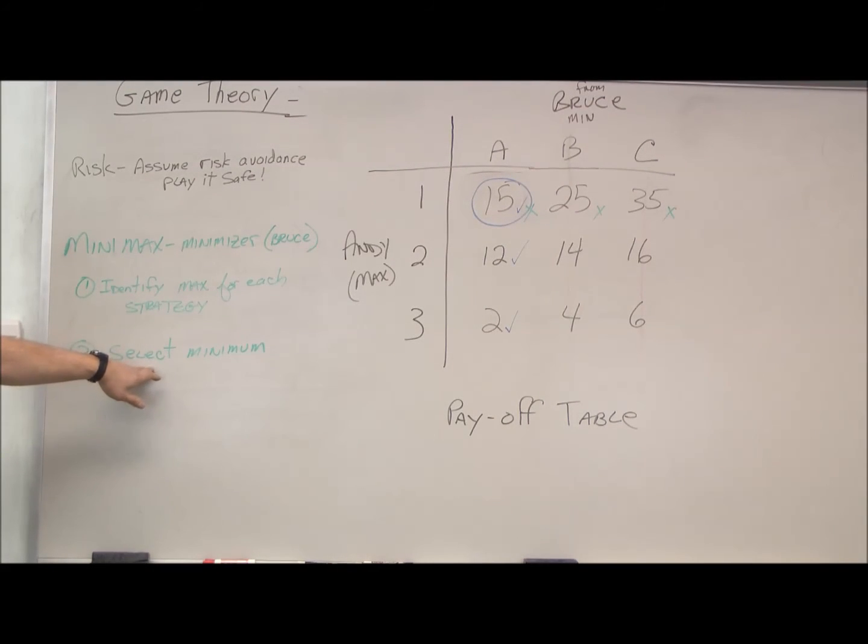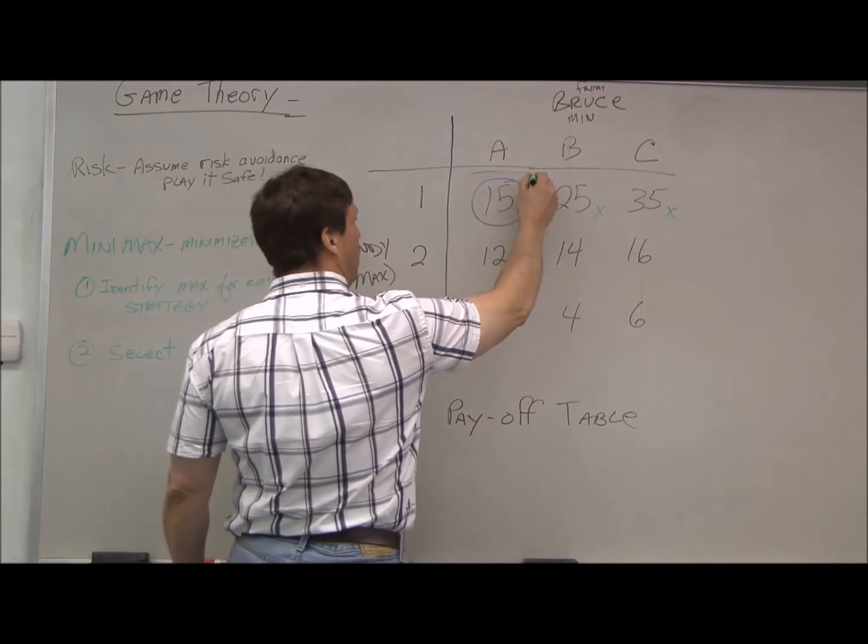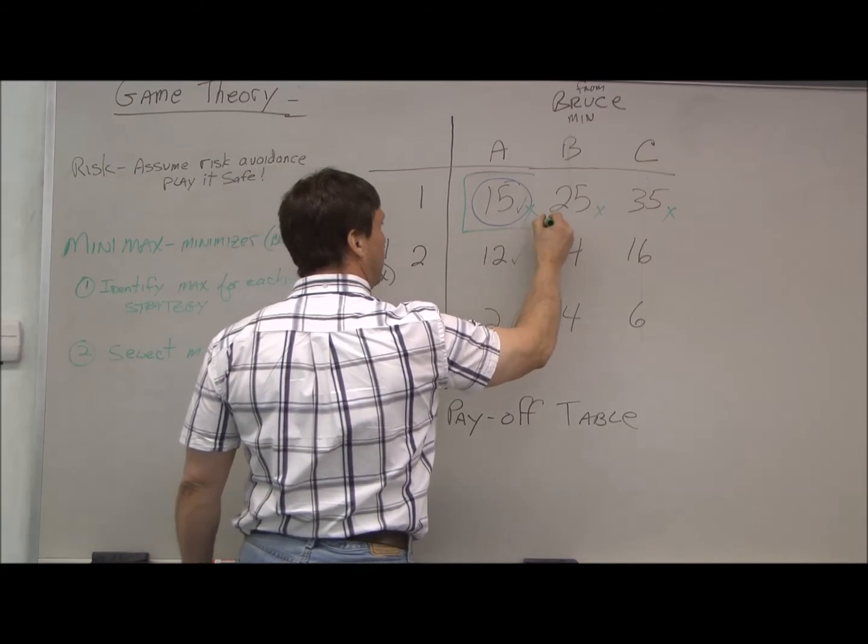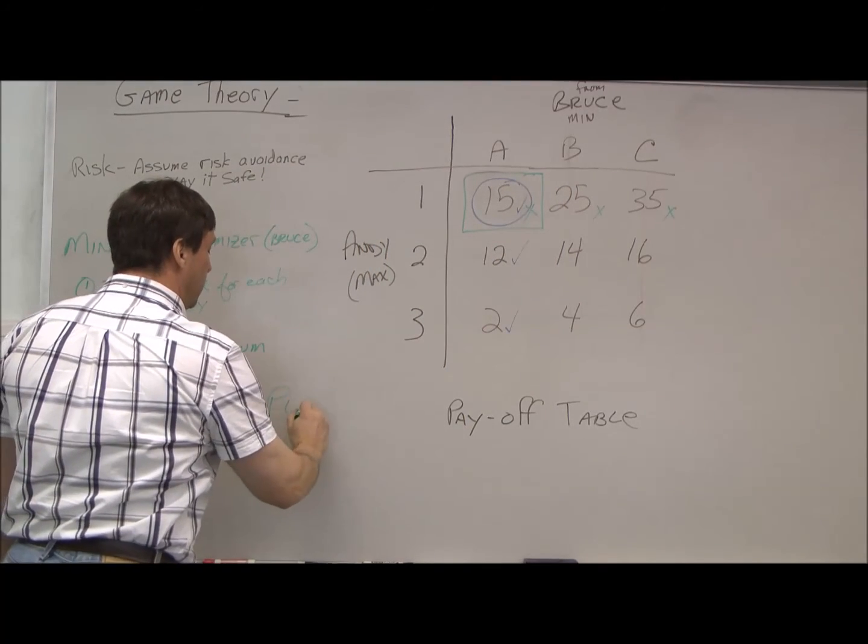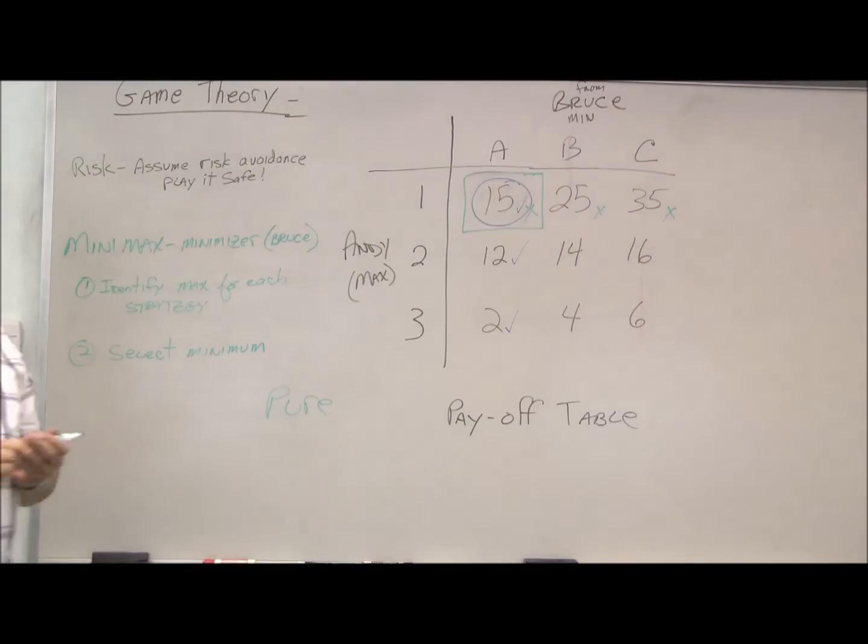Now from those three he selected, he selects the minimum. So once again, you can see we have a pure strategy, because both Andy and Bruce will always select strategy one or strategy A.